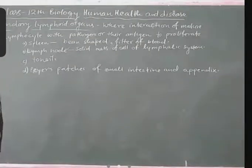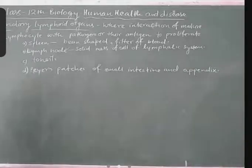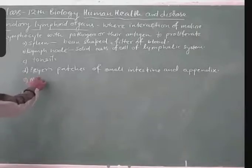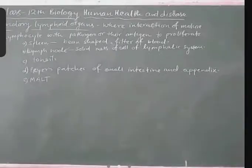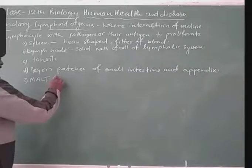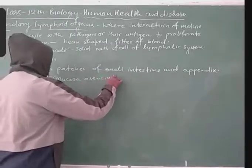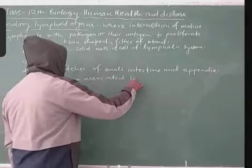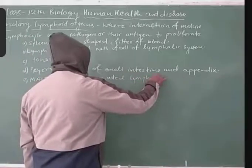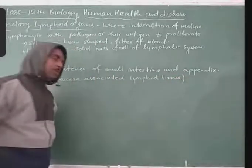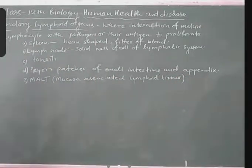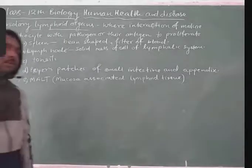Along with Peyer's patches, some other structures are also found in the mucous membrane of other respiratory and digestive tracts. These are referred to as MALT. The full form of MALT is Mucosa Associated Lymphoid Tissue. They are present in the lining of the major tracts of our body.